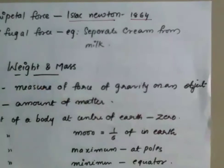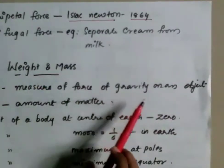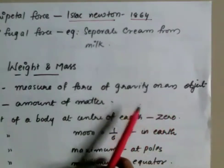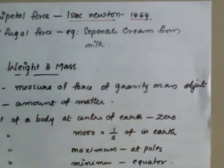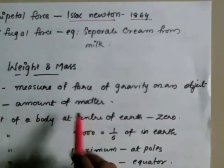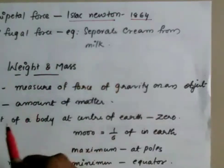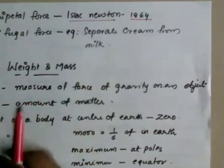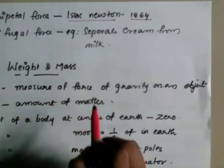Weight and mass. Weight is a measure of the force of gravity on an object. Mass is the amount of matter in an object. Mass is constant, but weight is different — weight depends on the gravitational force.